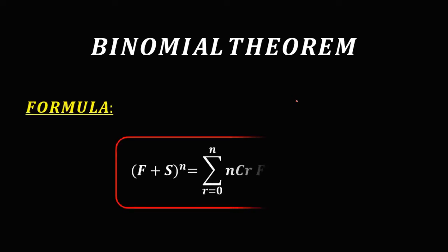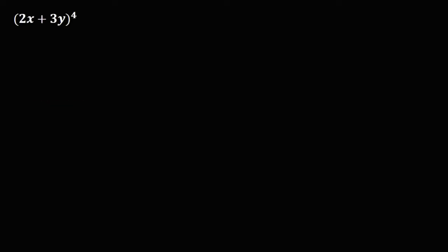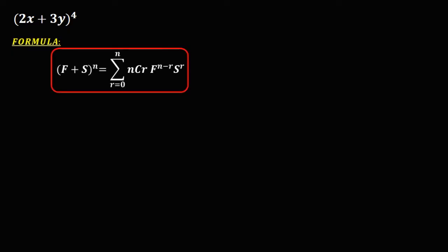Let's have this one — binomial expansion. Using the binomial theorem formula, from the given, we have 2x plus 3y to the power of 4. To expand this binomial equation using the formula: f, the first term, is 2x; s, the second term, is 3y; and n, the exponent, is 4.